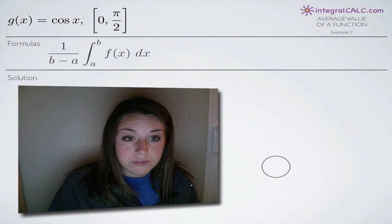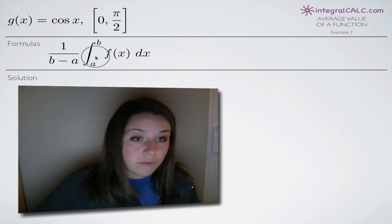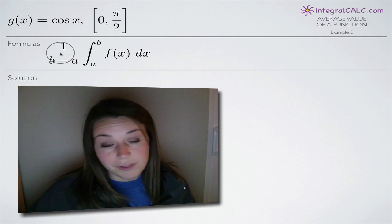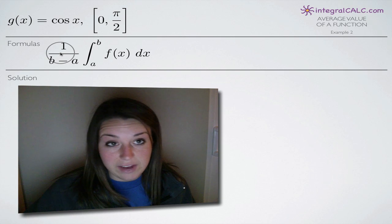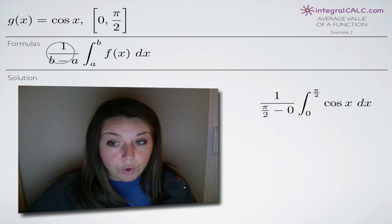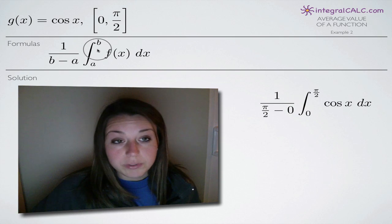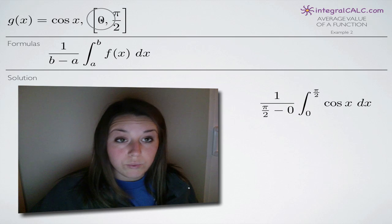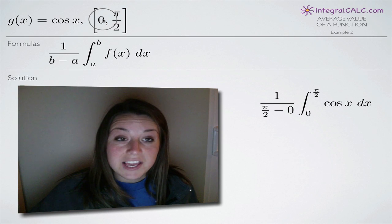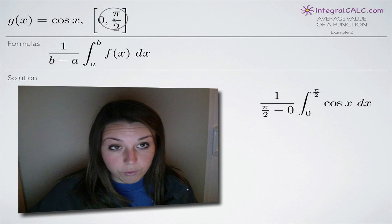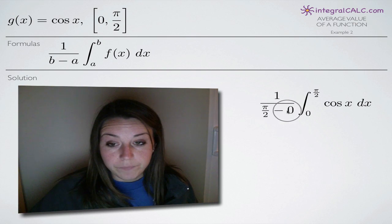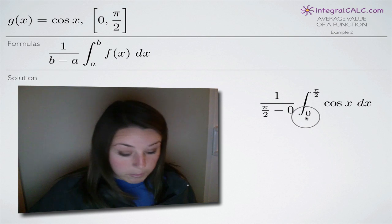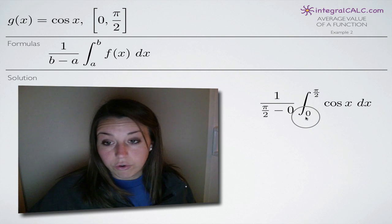The formula that we're going to be using is the average value formula — this is the formula we always use when looking to find the average value of a function over a given range. The first thing we do is plug in values for both a and b. We're given a range from a to b, so we plug in zero for a and pi over two for b, both in the fraction out front of the integral and as our limits of integration.